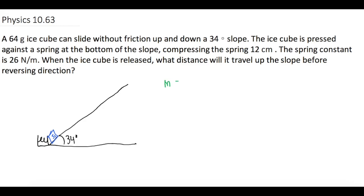So now they tell us the mass of the ice cube is 64 grams, which is 0.064 kilograms. And they tell us the spring is compressed by 12 centimeters. So delta x is how far it's compressed, 12 centimeters in SI units, 0.12 meters. And our k, our spring constant, is 26 newtons per meter.